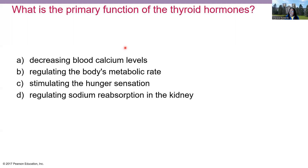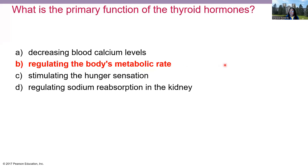A second poll question asks about the function of thyroid hormones. Most selected B: regulating the body's metabolic rate. Other options: decreasing blood calcium levels is parathyroid hormone; stimulating hunger sensation is ghrelin; regulating sodium reabsorption in the kidney involves angiotensin and aldosterone from the adrenal cortex. The correct answer is B — thyroid hormones regulate metabolic rate through the calorogenic effect.